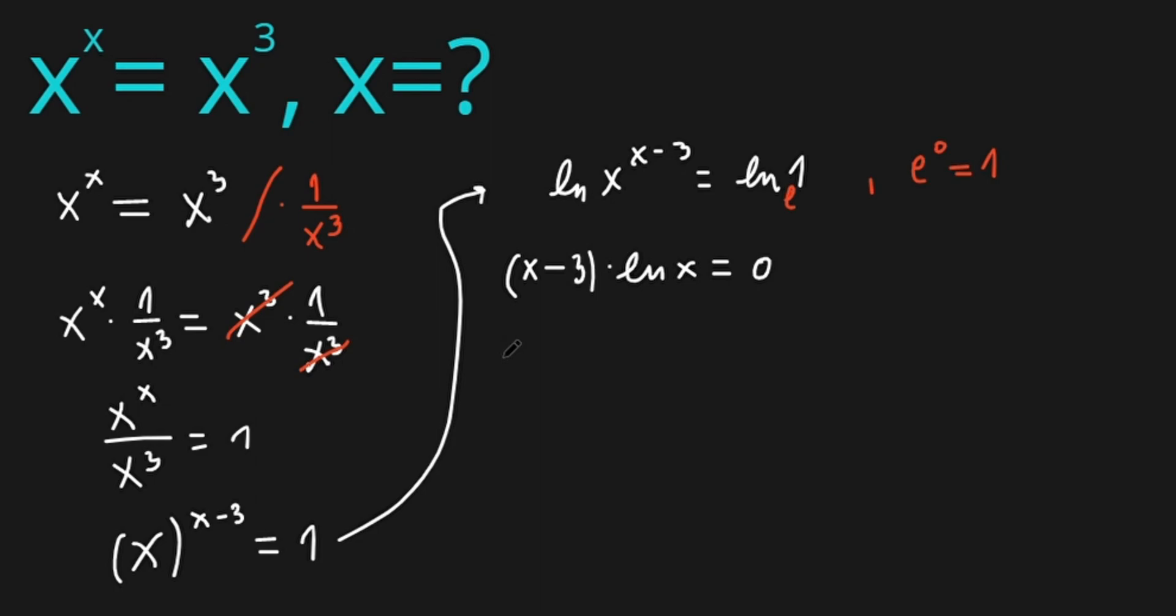So this equation has two roots. x minus 3 equals 0 or ln of x equals 0. Here x is 3 and here e to the power of 0 is x, so this means x is 1. And this is our answer.